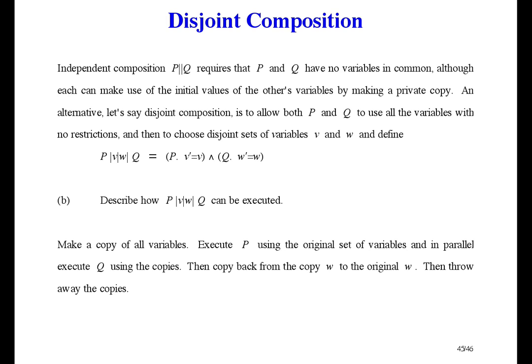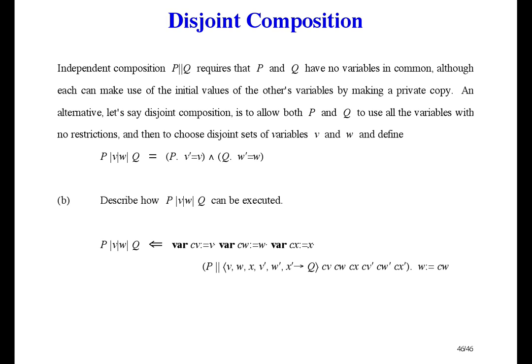Well, that's an informal description of the execution, and we can't prove it's correct until we formalize it. Making a copy of the variables means declaring new variables that are initialized to the values of the old variables. Then we execute P, and in parallel, we execute Q, but substitute the new variables in place of the old. Then we copy back W. Throwing away the copies happens because it's the end of their scope. Now that we've formalized the implementation, we can prove it correct by proving this implication. It's not hard, and I won't bother.